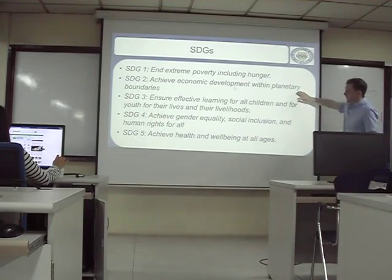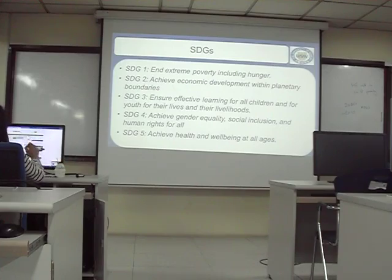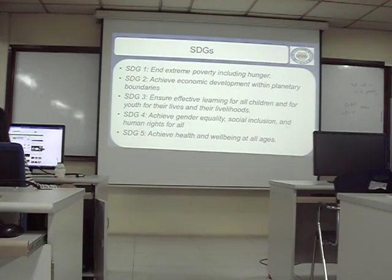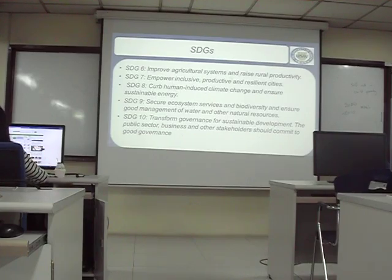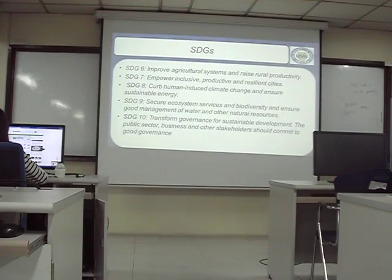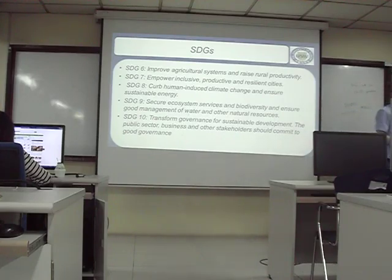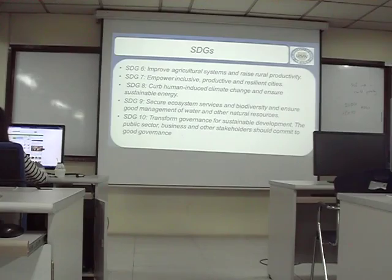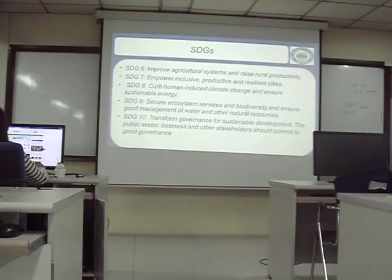They want to achieve economic development within planetary boundaries — thinking about the environment as we develop the economy. Ensure effective learning for all children. Achieve gender equality, social inclusion, and human rights for all. Achieve health and wellbeing at all ages. Improve agricultural systems and raise rural productivity. Empower inclusive, productive, and resilient cities. Curb human-induced climate change and ensure sustainable energy. Secure ecosystem services and biodiversity, and ensure good management of water and natural resources. And finally, transform governance in the business sector and other areas — we talked about corporate governance and good governance. Those are the ten Sustainable Development Goals the UN and world leaders are working on.